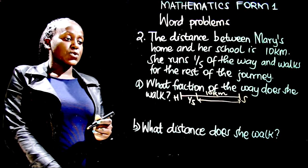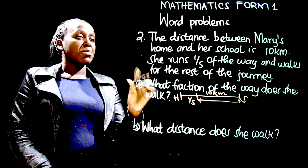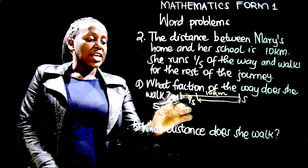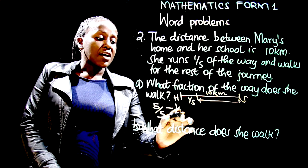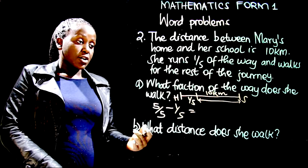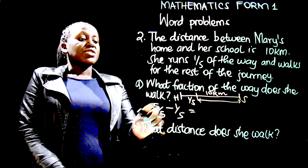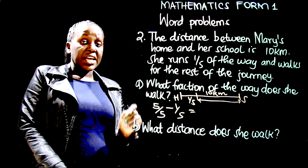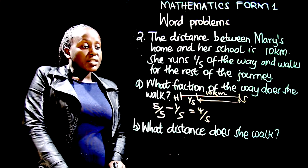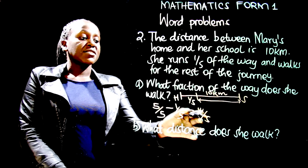The total fraction is 5 over 5 representing the whole journey, minus 1 over 5 which is the section she runs. Since both fractions have the same denominator, we subtract the numerators and retain the denominator: 5 minus 1 gives 4 over 5. So Mary walks four-fifths of the entire journey.